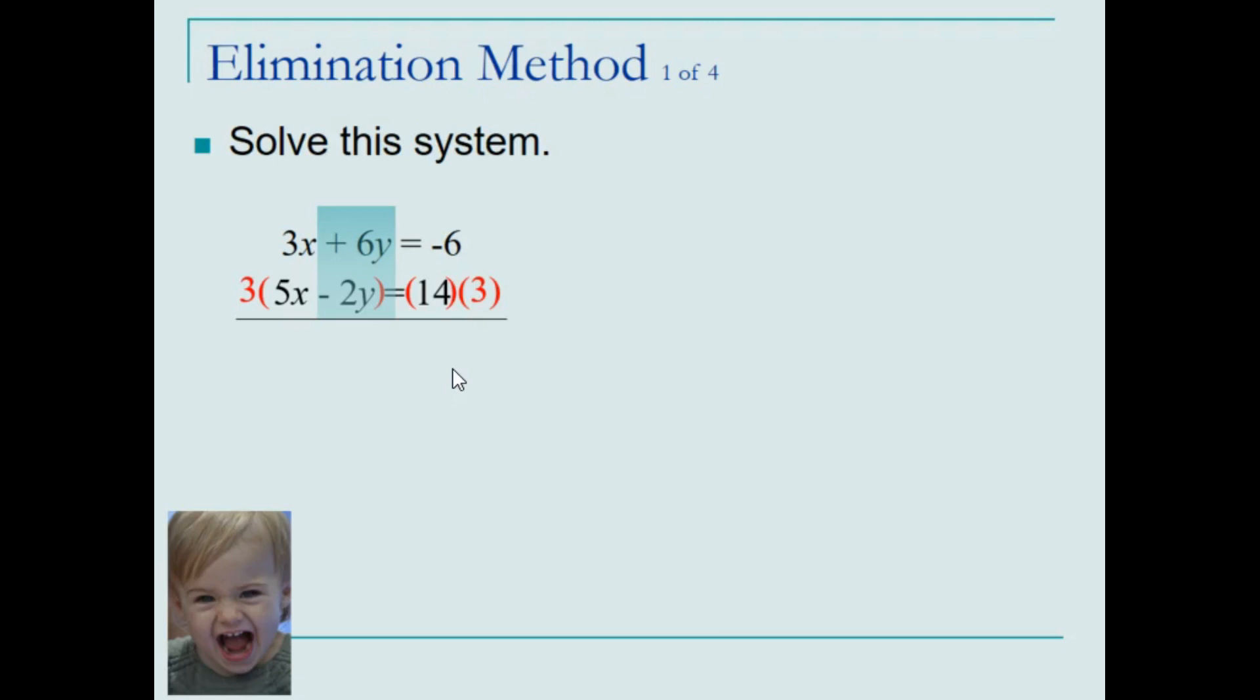To maintain equality, each and every term needs to be multiplied by that factor that will result in the same coefficient but opposite on, in this case, the y term. So we need the distributive property multiplying each term on the left by 3 and multiplying our 14 by 3 on the right, which results in an equivalent equation for equation number 2. Each of the terms has been multiplied by 3. Now we're set to add the two equations together.